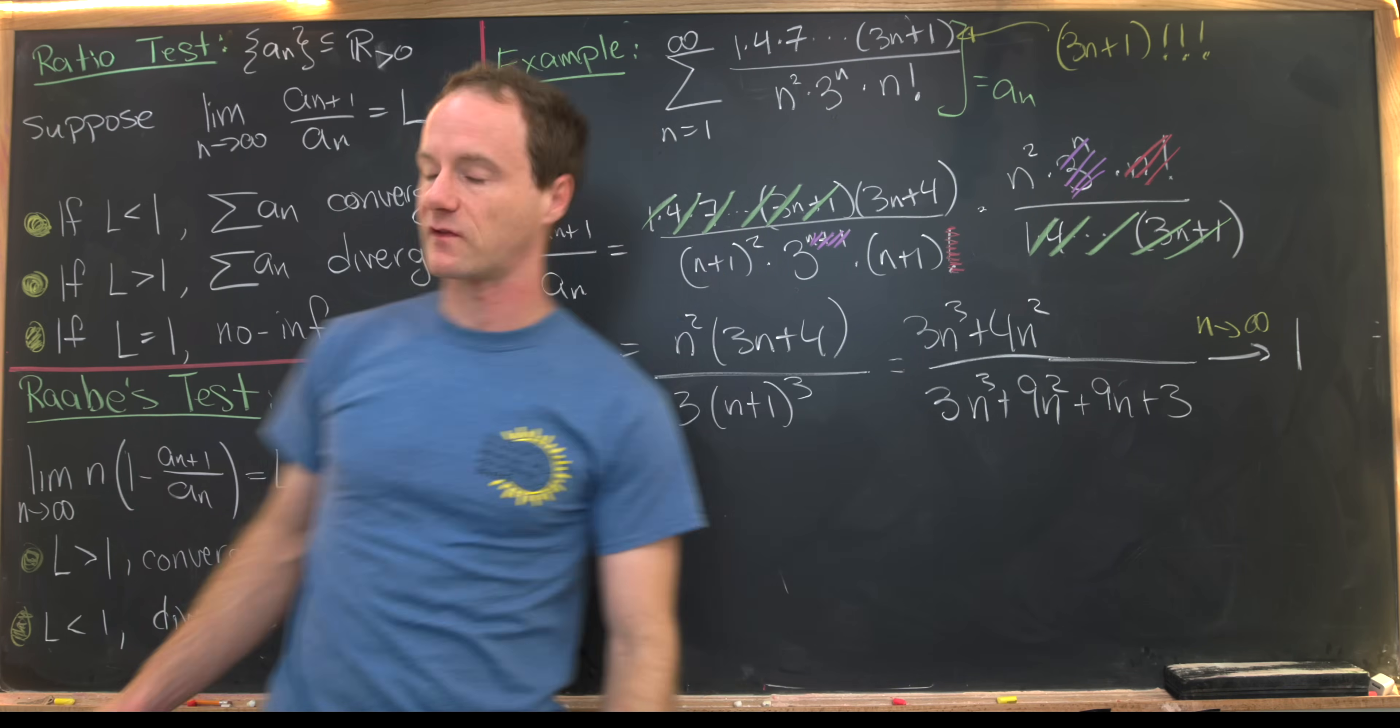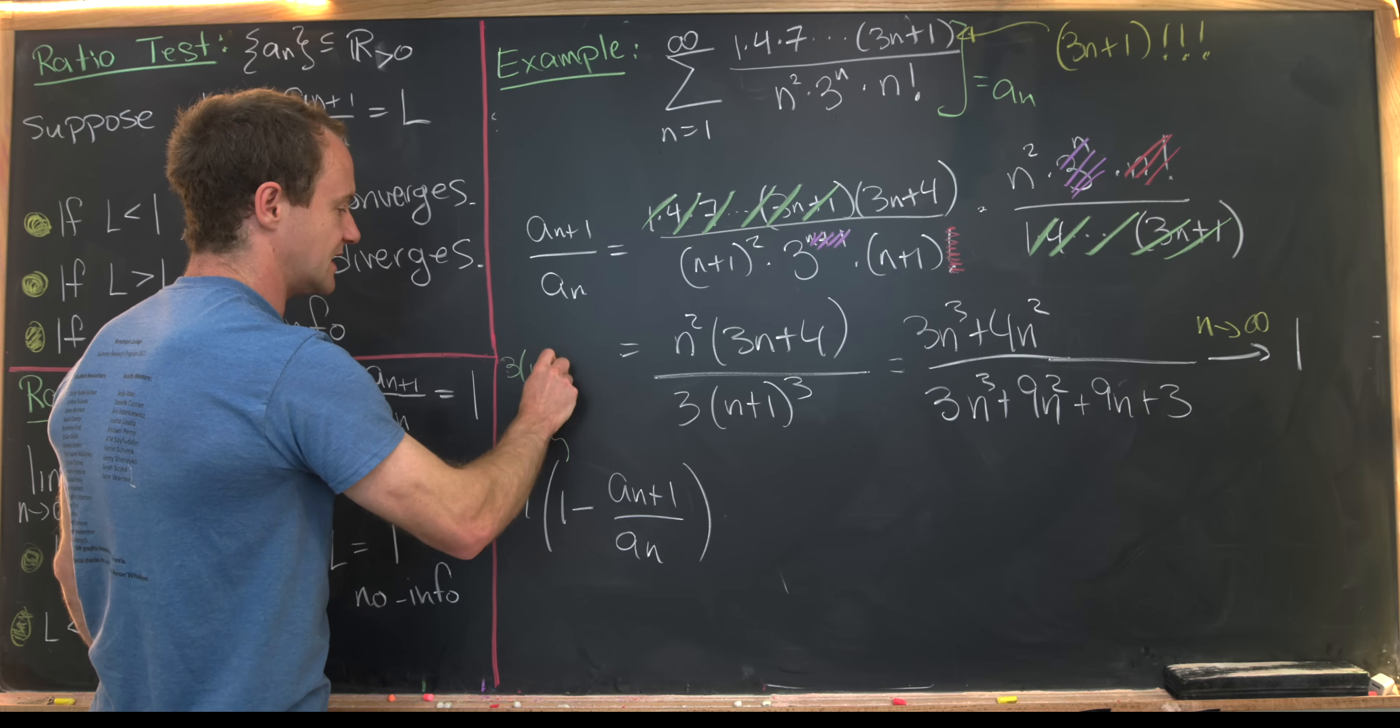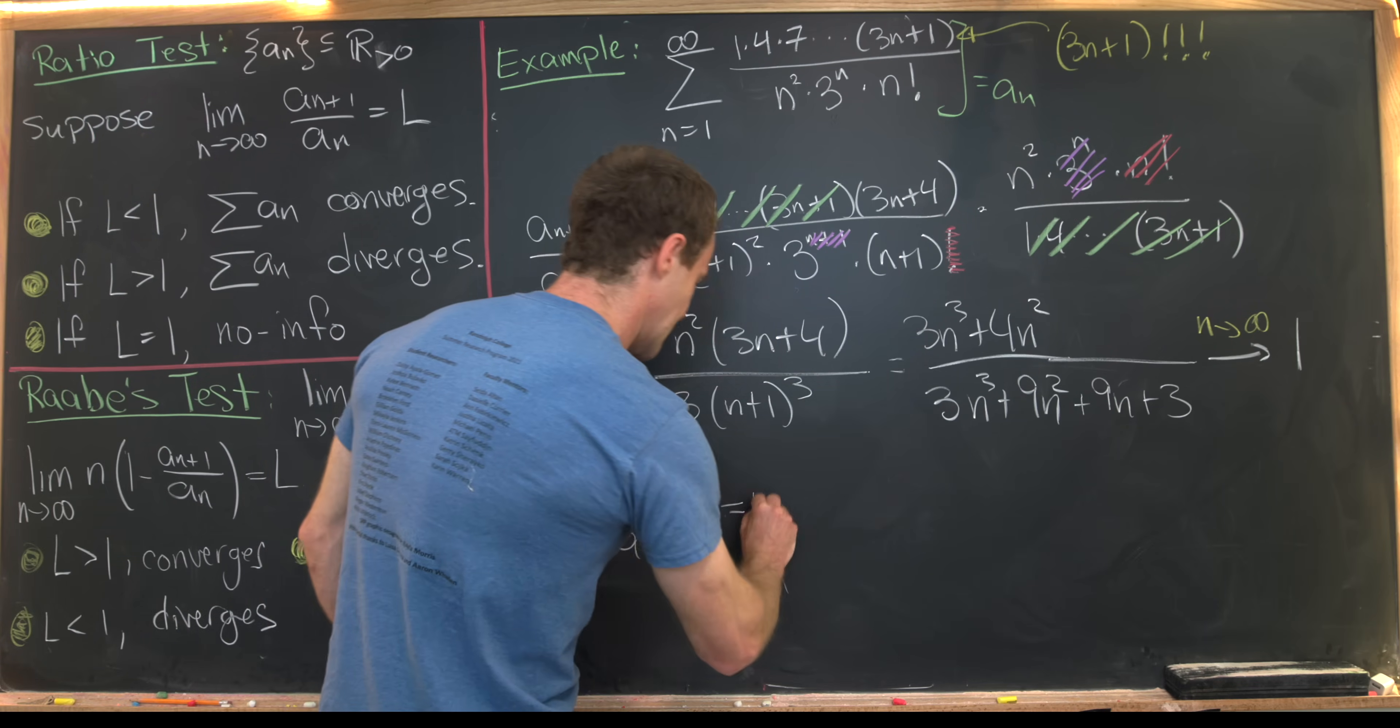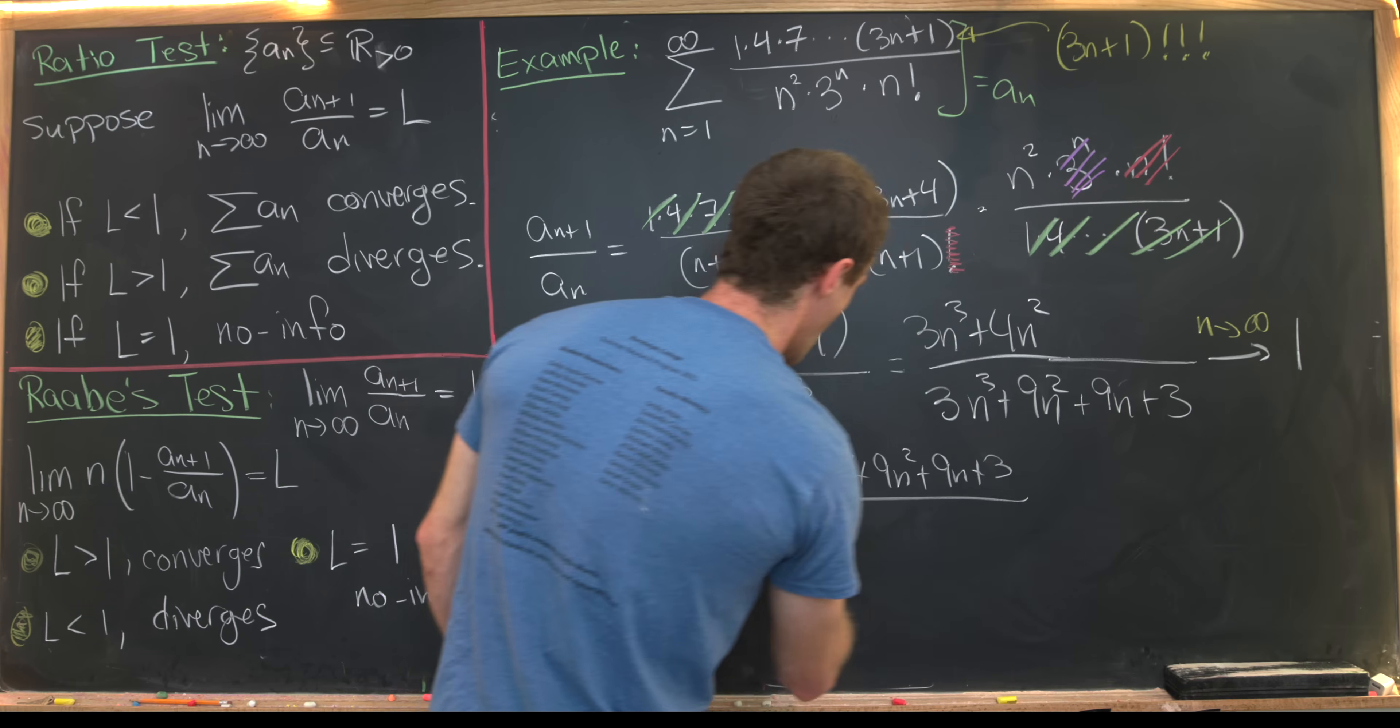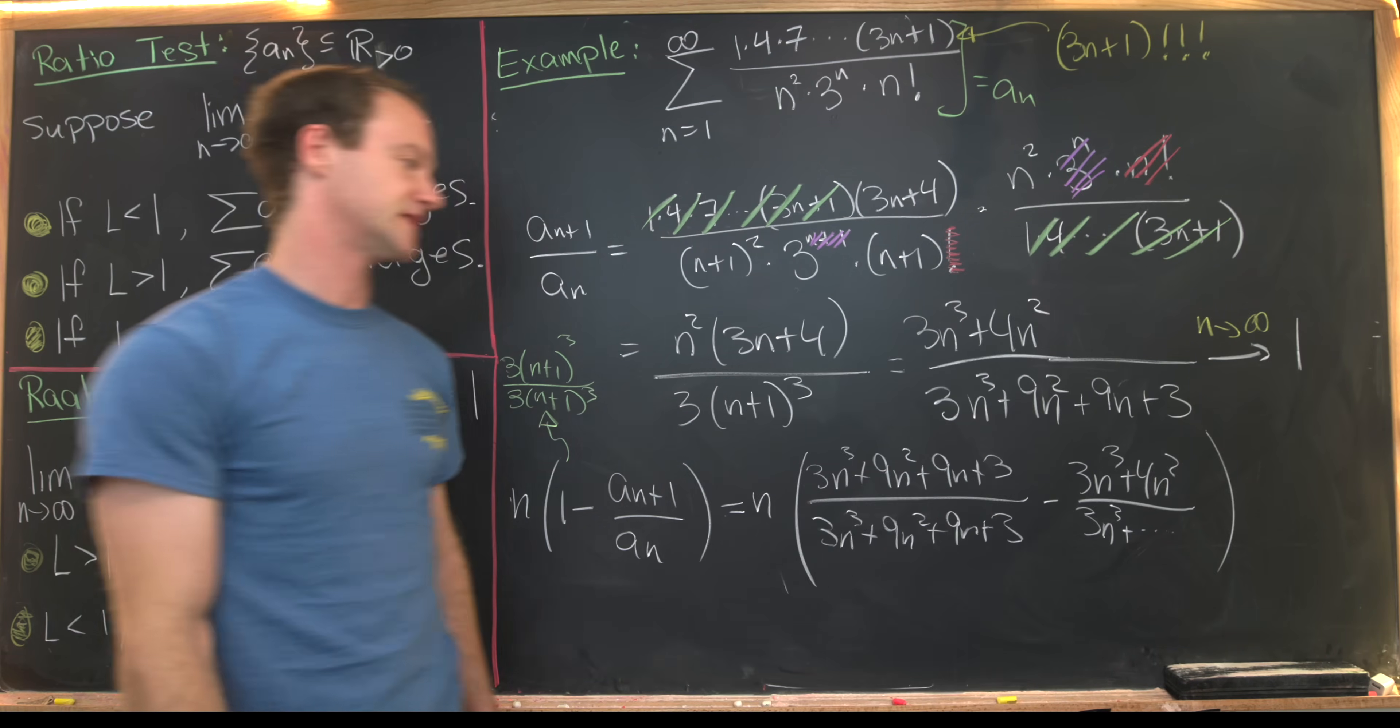Now let's calculate this limit. We've got n(1 - a_{n+1}/a_n). But now let's think about 1 as 3(n+1)³/[3(n+1)³], but multiply it out so we have some simplification. Okay, so let's see what we get. We'll have n times, so expanding 1, we'll have (3n³+9n²+9n+3)/[3n³+9n²+9n+3] minus (3n³+4n²) all over, well, that same thing.